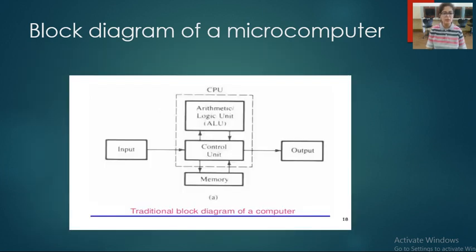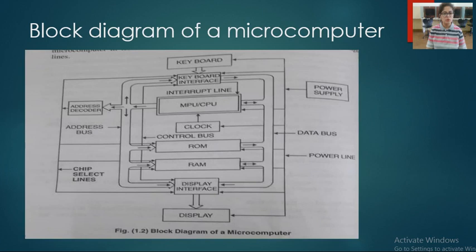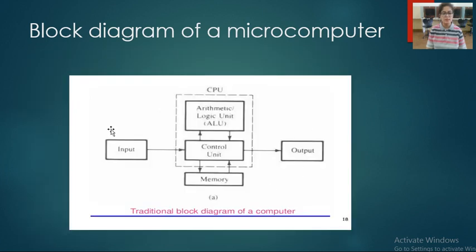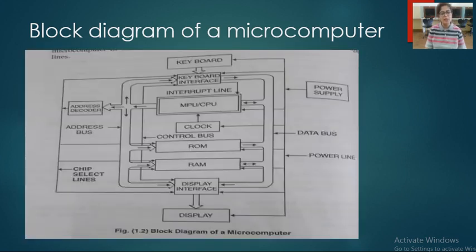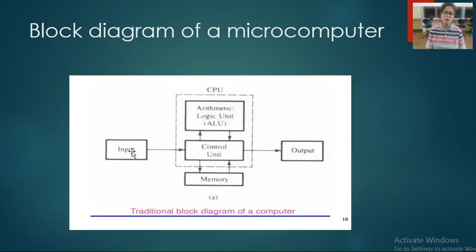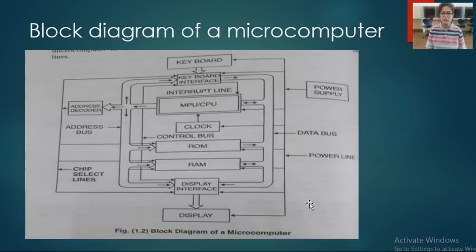Now, this is the basic version of this diagram. Here is input, then input interface, and this is CPU. In the CPU there are two units: ALU and CU. Output is the output device and there must be an output interface. In memory there are RAM and ROM. This is actually a detailed explained version of this diagram.